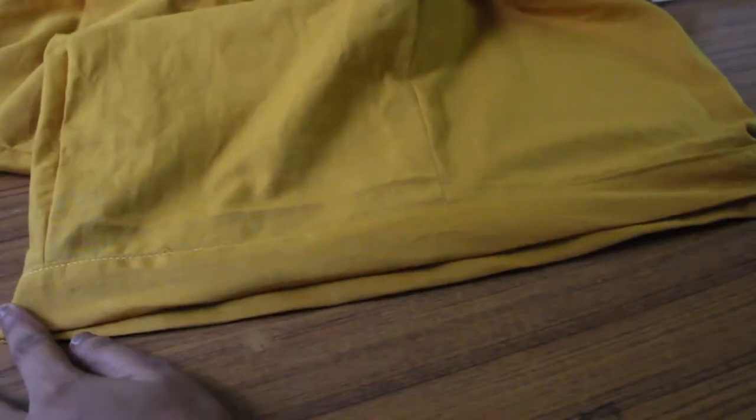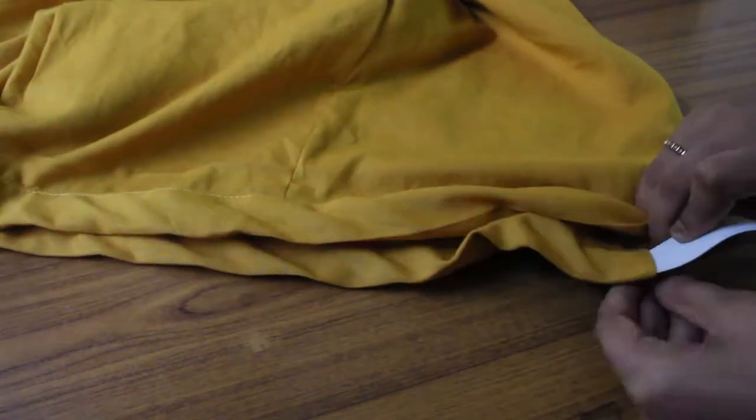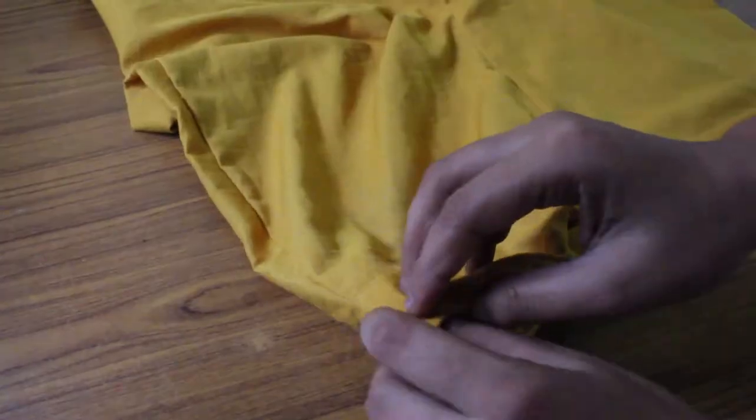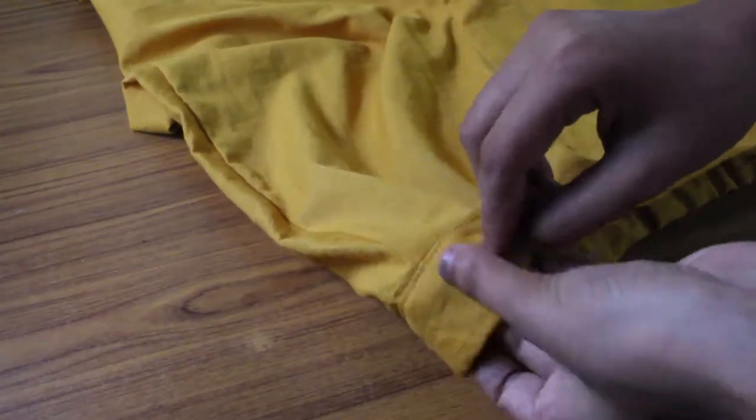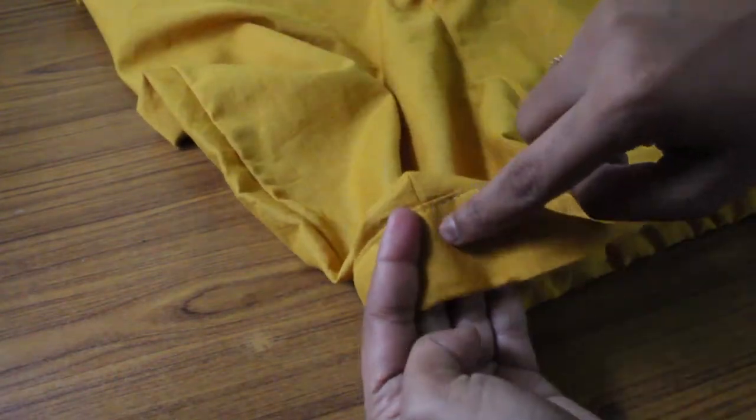This is how it will look once done. With the help of a safety pin I inserted the elastic through the casing. Once I reached the side seam I secured the elastic from both ends with a straight stitch.